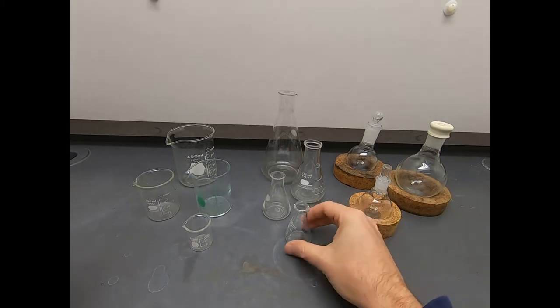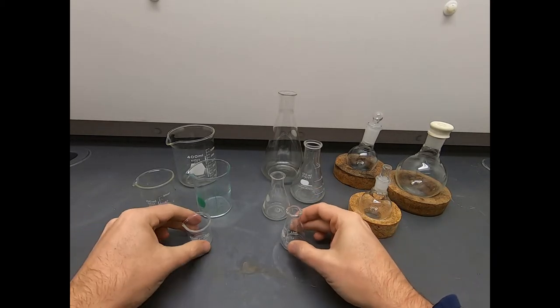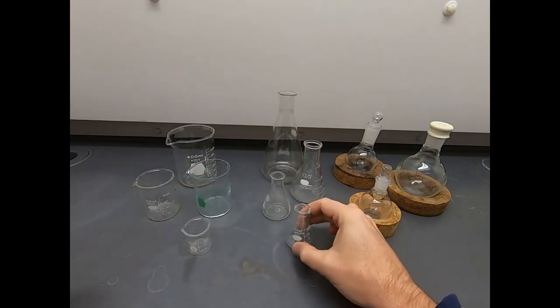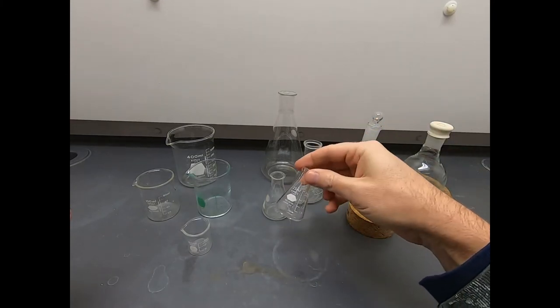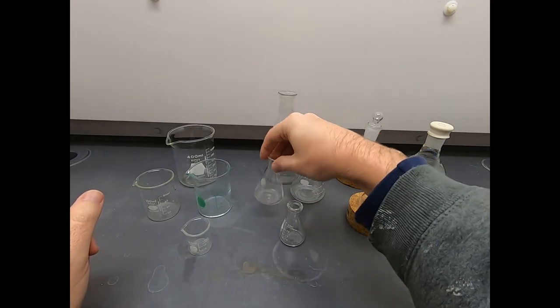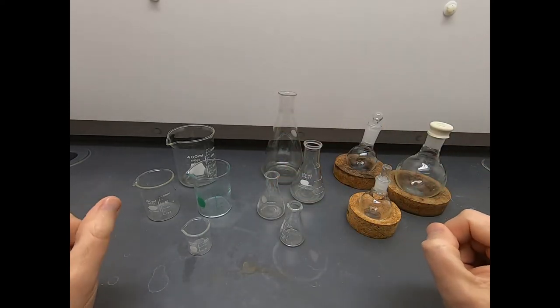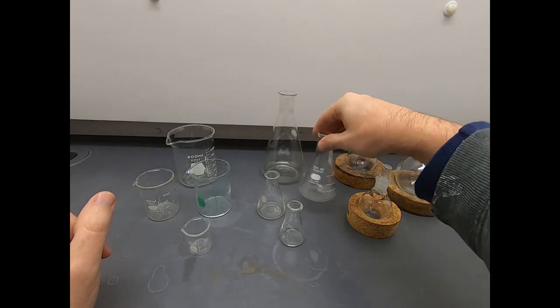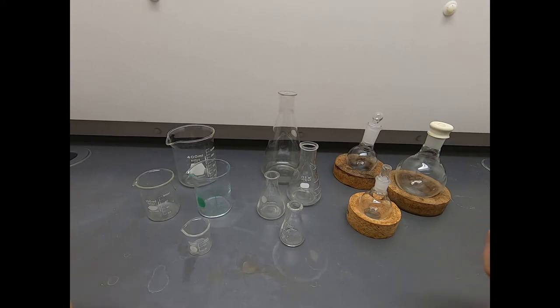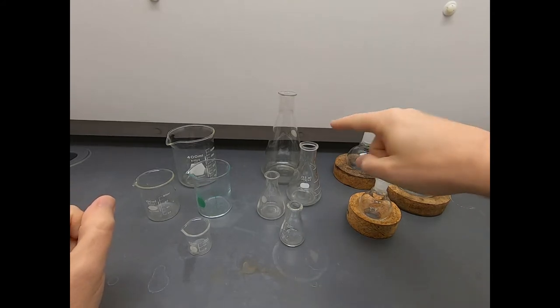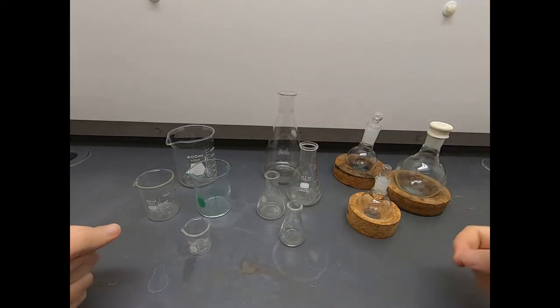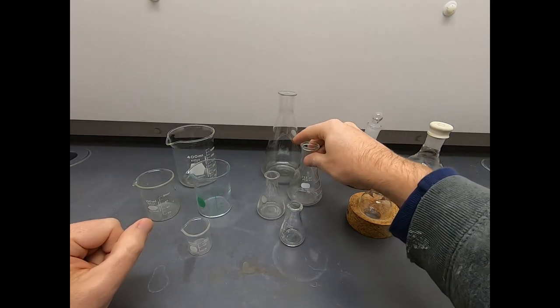In the middle of the screen, we have the Erlenmeyer flasks. Erlenmeyer flasks are different from a beaker. They have this conical shape, and these are particularly good if you have something that you're going to need to swirl around. The slanted sides help keep the contents in place. They're also good because if you're going to heat something up and don't want evaporation, it has a smaller surface area of exposure at the top, so there'll be less evaporation.